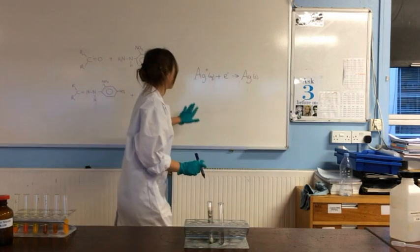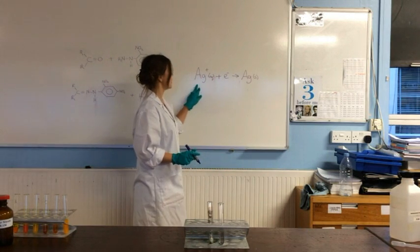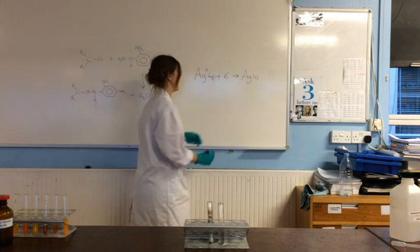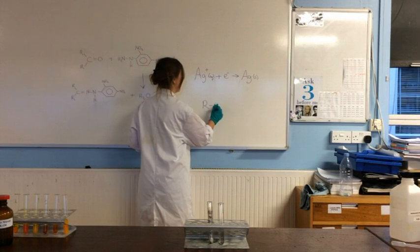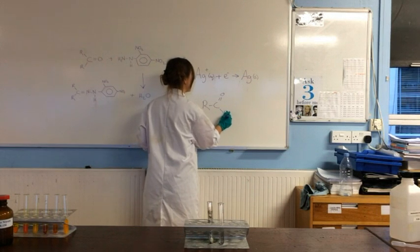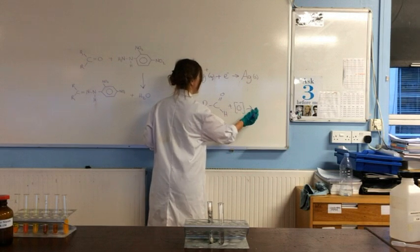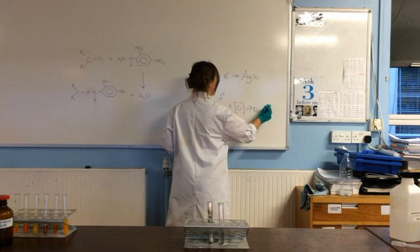So here if you can see we have our aqueous silver ion and that's reduced to form our solid silver precipitate. And that is reduced in our reaction with our aldehyde which is oxidized to give a carboxylic acid.